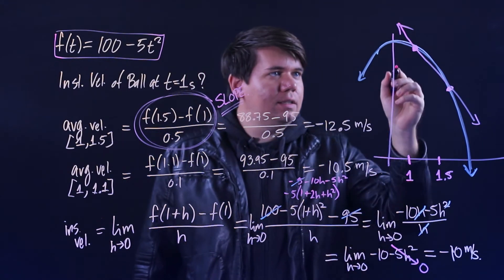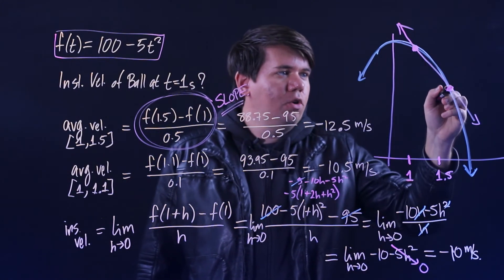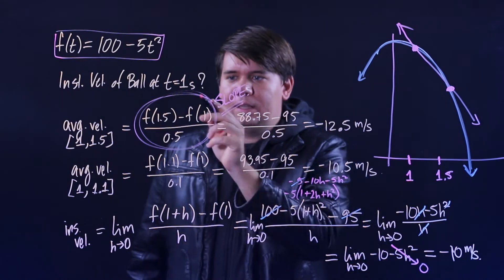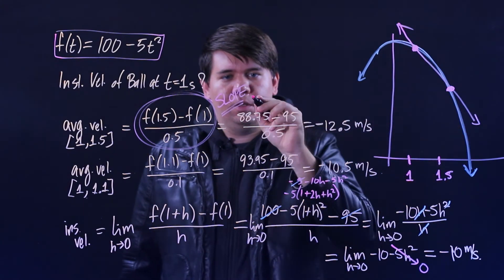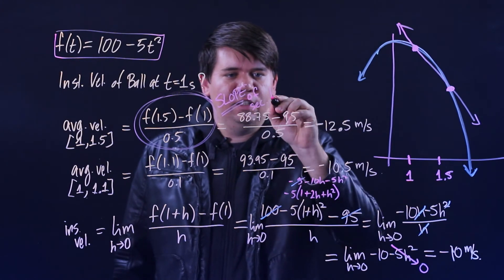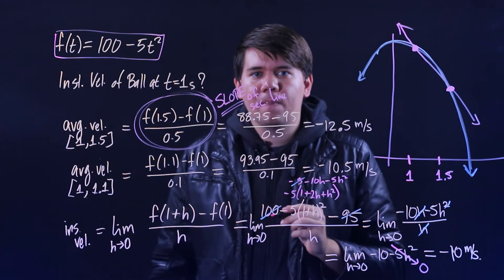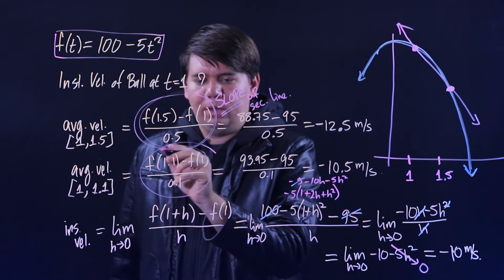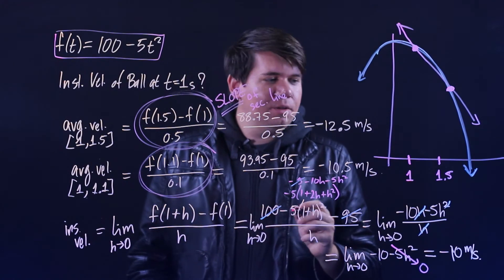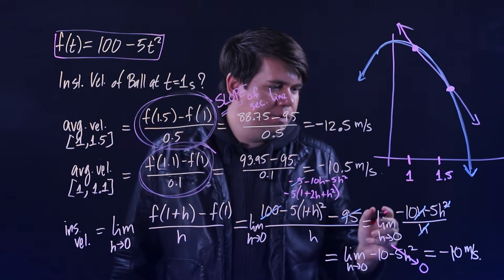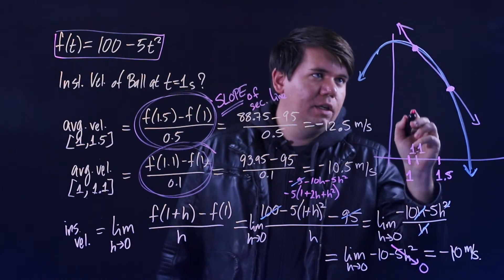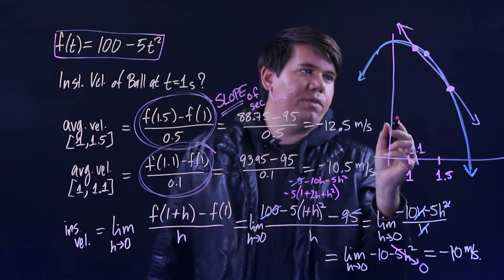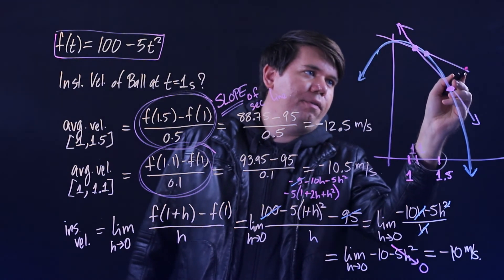This one's also giving you a slope of a secant line, but now instead of it going from 1 to 1.5, you're going from 1 to right here at 1.1. So the second point would be somewhere over here, so it's the slope of this line.